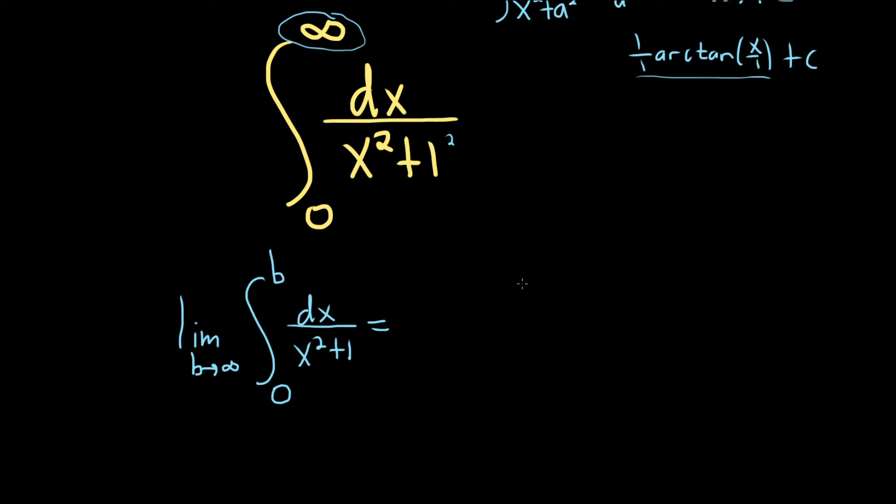Now in the next step, we'll go ahead and integrate. So this is the limit as b approaches infinity of the arctangent of x, and we're going from 0 to b.